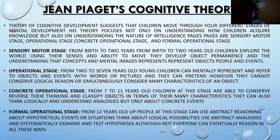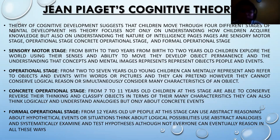The pre-operational stage happens from two to seven years old. Young children can mentally represent and refer to objects and events with words or pictures, and they can pretend. However, they cannot conserve, use logical reasoning, or simultaneously consider many characteristics of an object. The concrete operational stage happens around seven to eleven years old. Children at this stage are able to conserve, reverse their thinking, and classify objects by their many characteristics. They can think logically and understand analogies, but only about concrete or tangible events.